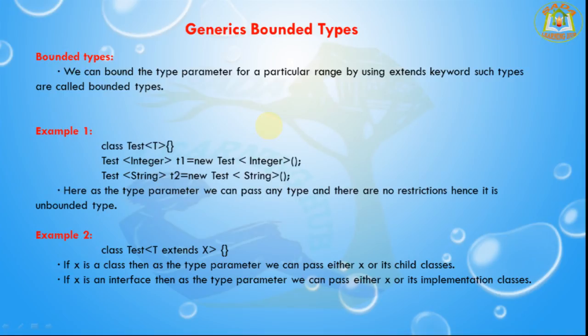Hello everyone, I am Shadasharao and welcome to Soda Learning Hub. Today's session we are going to learn generic bounded types. We can bound the type parameter for a particular range by using the extends keyword. Such types are called bounded types.